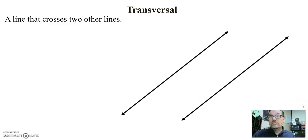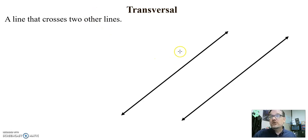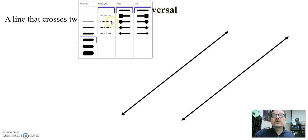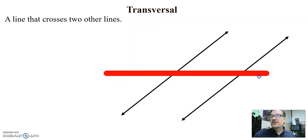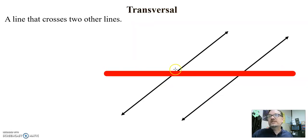I just used the word transversal. What is a transversal? Simply put, a transversal is a line that crosses over two other lines. So if I give you two lines right here, a transversal — let's do it in red — this dark red line is a transversal. It is a line that goes over two other lines.